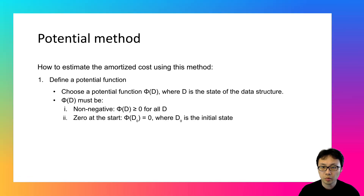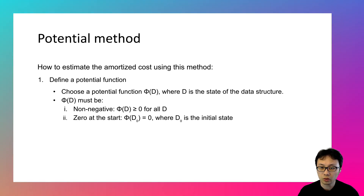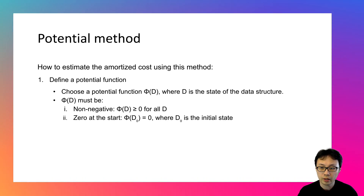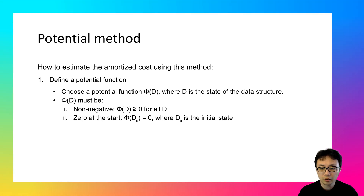In more formal terms, the potential function phi assigns a value — a number — to the current state of a data structure. That number represents how much work has been stored up for later use. The value is 0 at the initial state and will always be greater than or equal to 0 as the state evolves, because it represents a potential. In physics, there is no such thing as negative potential energy. If you come up with a potential function that generates a negative value, you will know it needs to be updated.